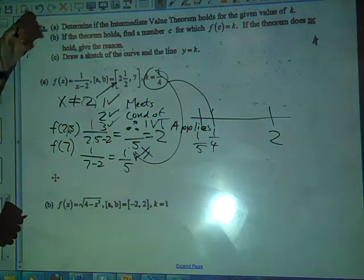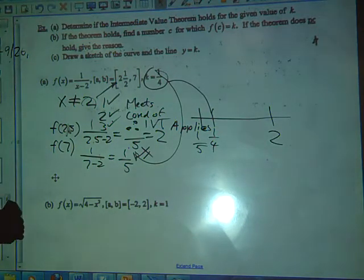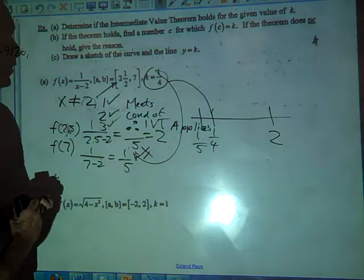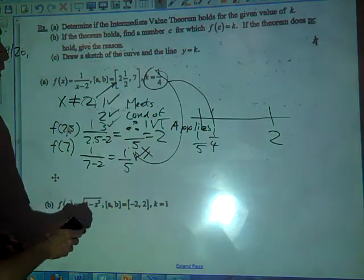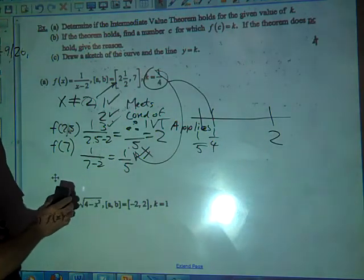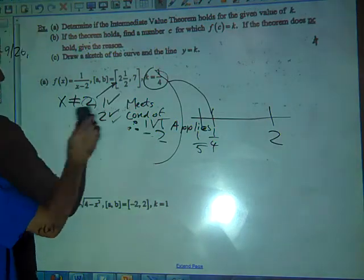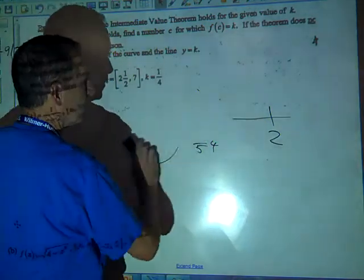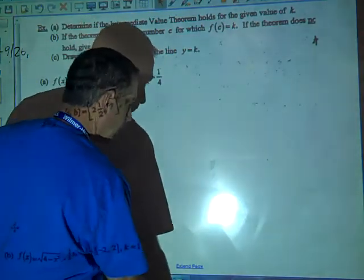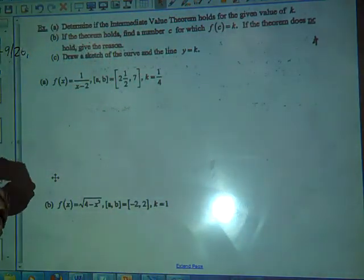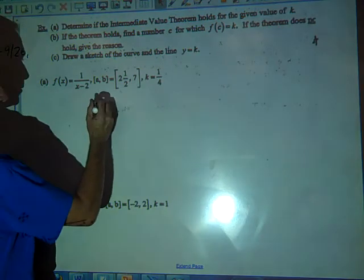But we haven't found the number c yet right? So let's go ahead and do the number c for which f of c equals k. Okay so we're going to set this equal to 1 fourth.